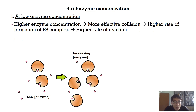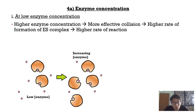When the enzyme concentration is increased, because there are more enzymes available, the effective collision between enzyme and substrate obviously increases. Therefore, there is a higher rate of formation of enzyme-substrate complex, and that increases the rate of reaction.